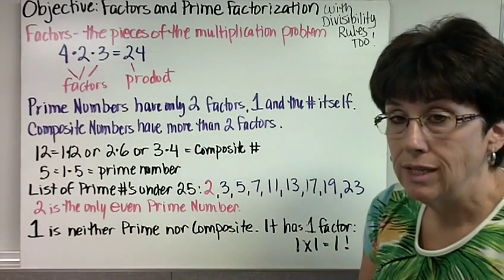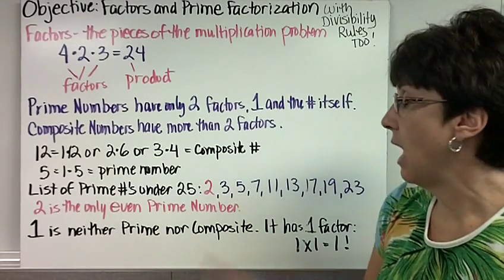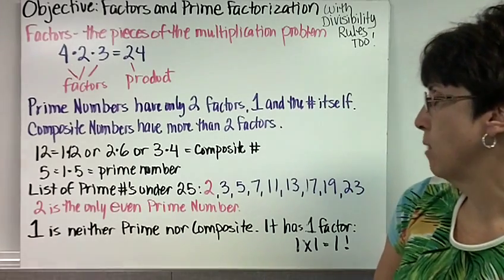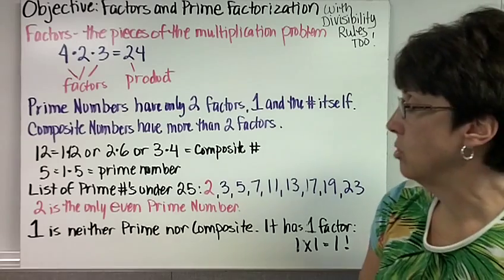2 is the only even prime number because every other even number is divisible by 2. The only way to get it is 1 times 2.